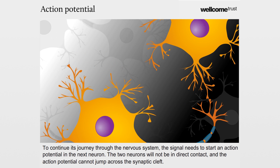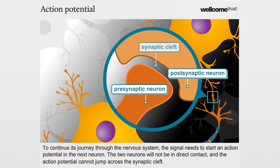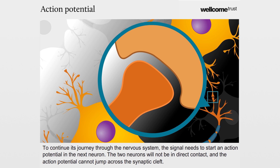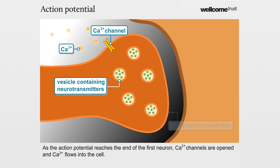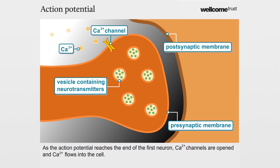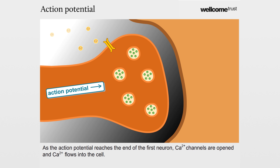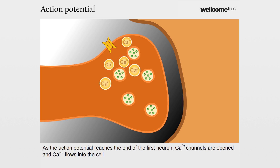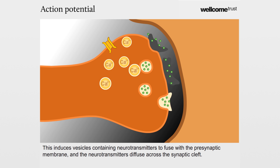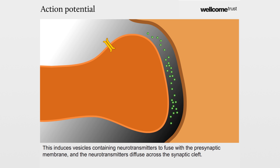To continue its journey through the nervous system, the signal needs to start an action potential in the next neuron. The two neurons will not be in direct contact and the action potential cannot jump across the synaptic cleft. As the action potential reaches the end of the first neuron, calcium channels are opened and calcium flows into the cell. This induces vesicles containing neurotransmitters to fuse with the presynaptic membrane and the neurotransmitters to diffuse across the synaptic cleft.